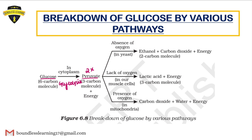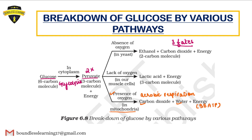When pyruvate is formed, it can follow three different pathways. First, in the mitochondria: glucose breaks down in the cytoplasm into pyruvate, then this pyruvate migrates into the mitochondria. When oxygen is present, aerobic respiration takes place. The products of aerobic respiration are carbon dioxide, water, and energy — 38 ATP of energy.